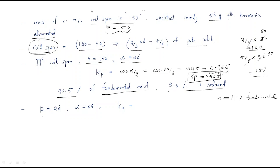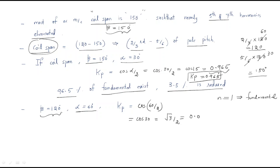For example, if coil span beta is 120 degrees, then alpha becomes 60 degrees. Then kp = cos(60/2) = cos(30°) = root 3 by 2, which equals 0.866. So kp is 0.866.